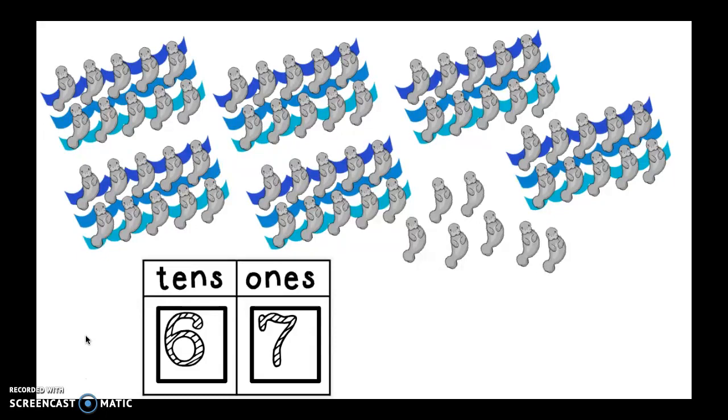Can you go ahead and write that, the say ten way on your board and then press play to check yourself? Okay, did you write it the say ten way? Did you write six tens and seven ones? Good job. What about, can you write a number sentence where you're adding the tens and the ones together? Good. Did you write 60 plus seven? Oh, perfect. And what about the regular way? How can I say six tens and seven ones the regular way? Can you write that down? Ready? Did you say 67?